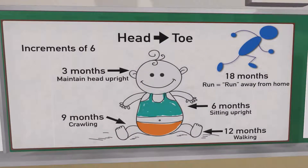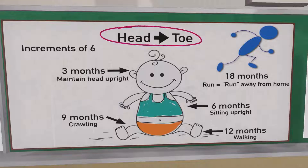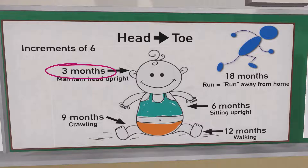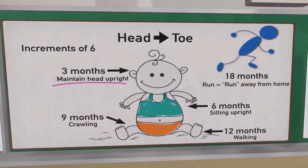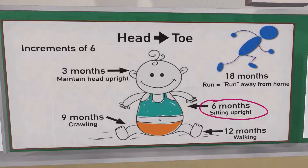Here we have a mnemonic for gross motor abilities that a baby should have, going from head to toe. At three months of age, a baby should be able to maintain a head upright position — for example, if the parent is holding the baby. At six months, we look at the torso — a baby should be able to sit upright.